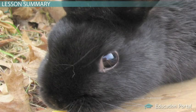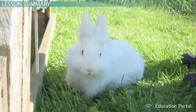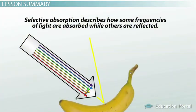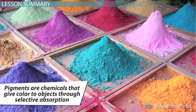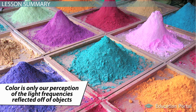If all frequencies are absorbed by the object, then it appears black. If all frequencies are reflected, then it appears white. Selective absorption describes how some frequencies of light are absorbed while others are reflected, resulting in the appearance of color. Pigments are natural or man-made chemicals that give color to objects through selective absorption. While we often describe objects as being a certain color, the truth is that color is only our perception of the light frequencies reflected off of objects.